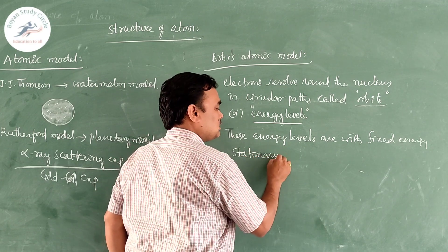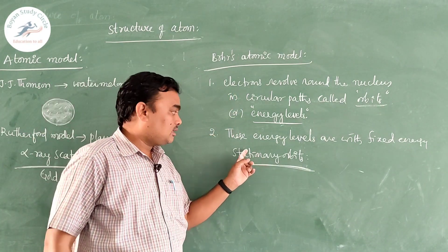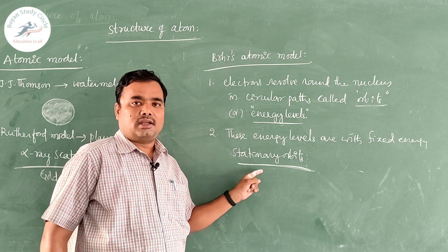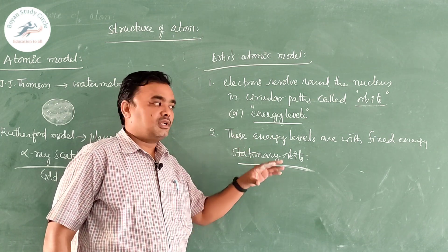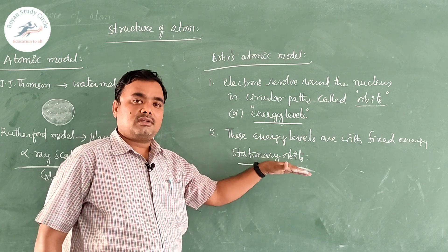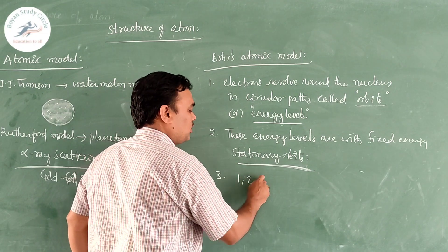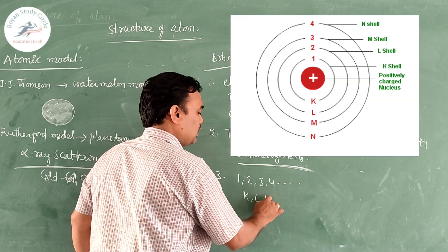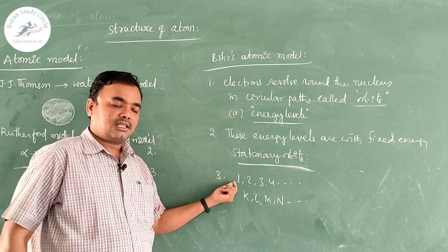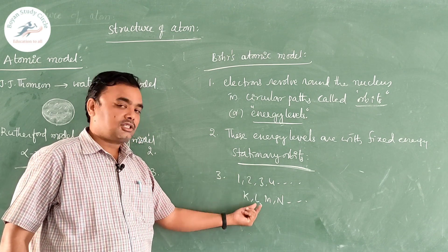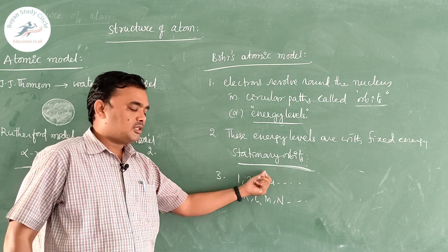By putting forward the stationary orbits concept, he can explain the stability of the atom. Whenever electrons revolve in these stationary orbits, they neither lose energy nor gain energy — they move with stable energy, that is why the atom is stable. These orbits are numbered 1, 2, 3, 4 and so on, or K, L, M, N and so on. K shell means first energy level, L shell means second energy level, M shell means third, N shell means fourth.